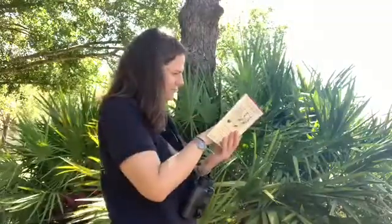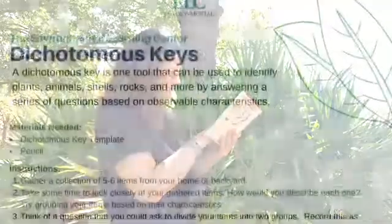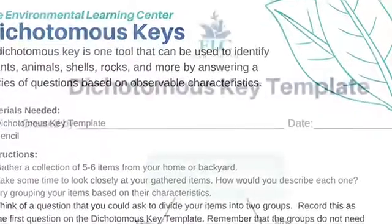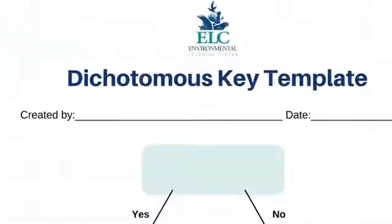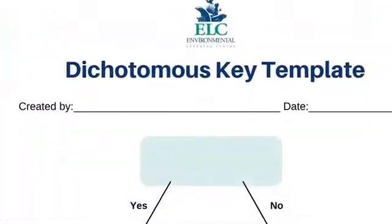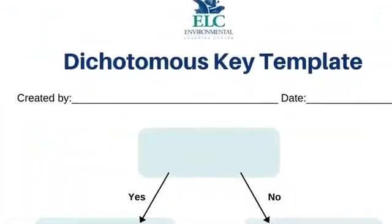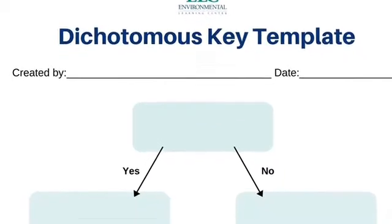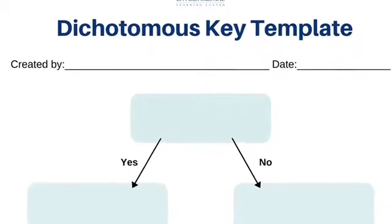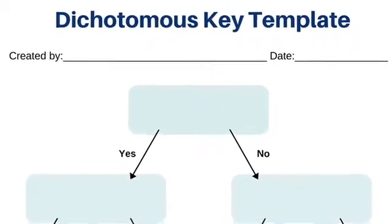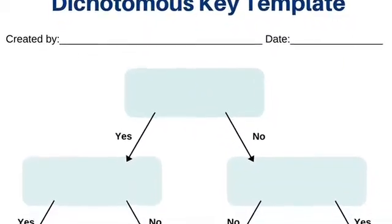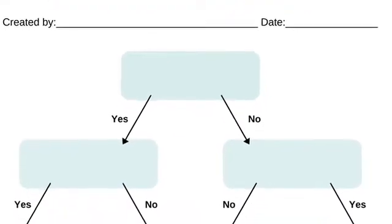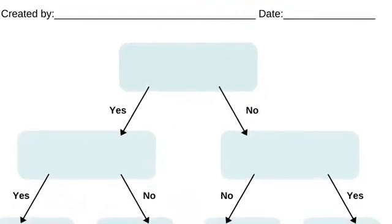One great tool is a dichotomous key. A dichotomous key is made of a series of statements that each consists of two options to describe something that can be observed about the plant or animal. The user must decide which statement best describes the plant or animal, following the guide until the plant or animal is identified.